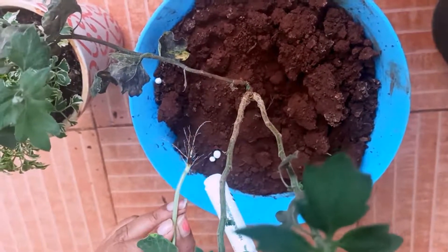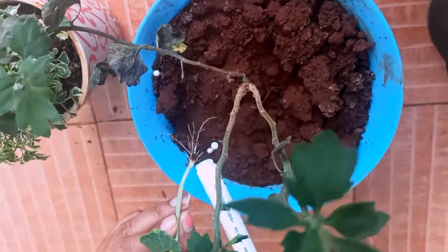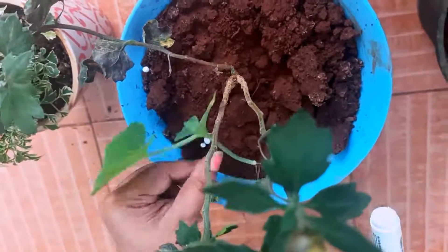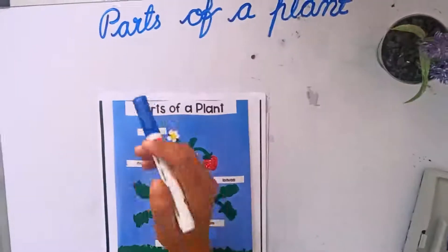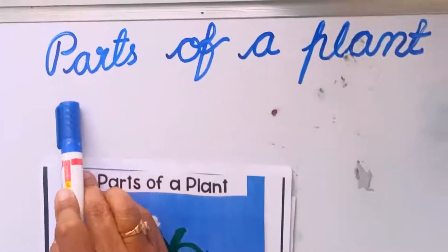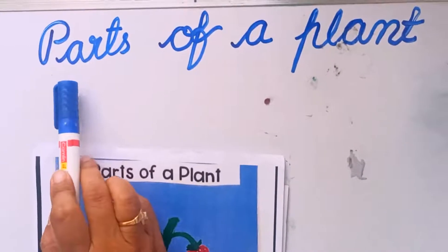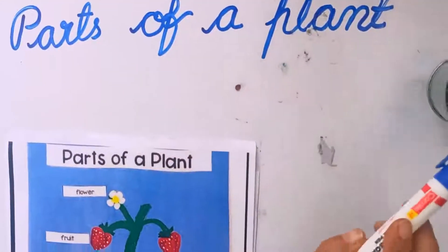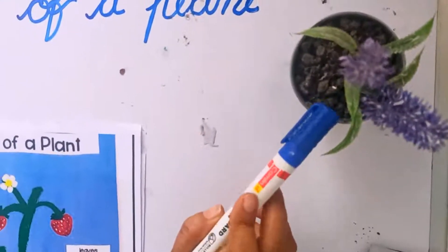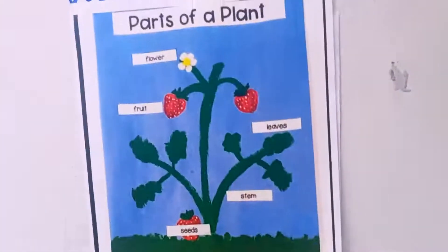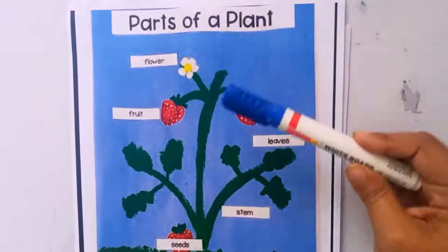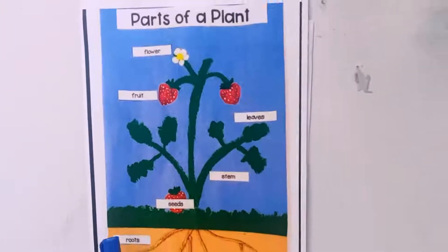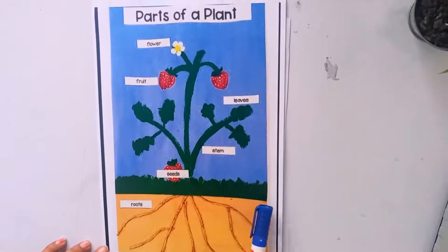Now I am going to explain it. Children, what are we learning today? Today we are learning parts of a plant. Now just go through this picture — this is a picture of the different parts of a plant.